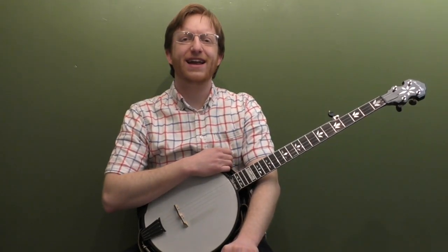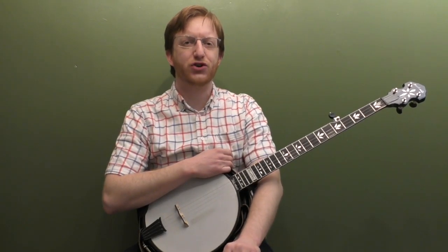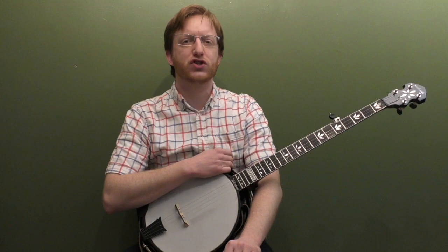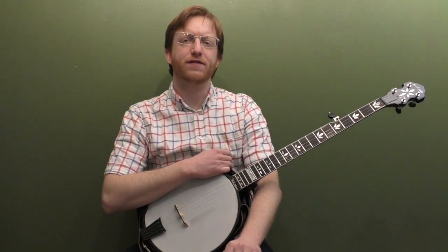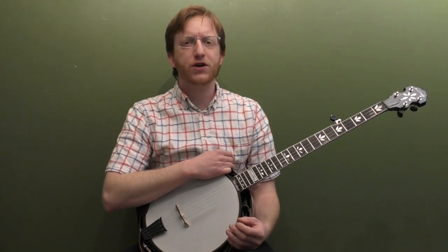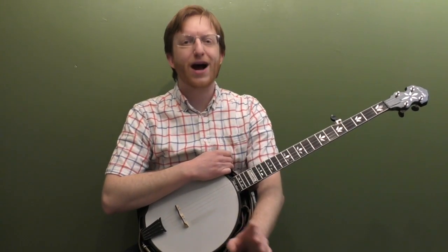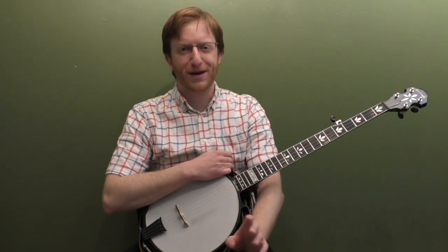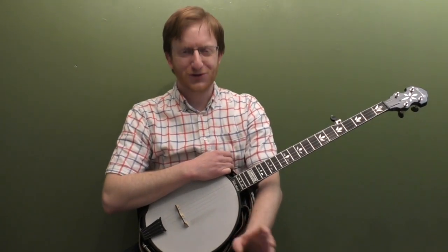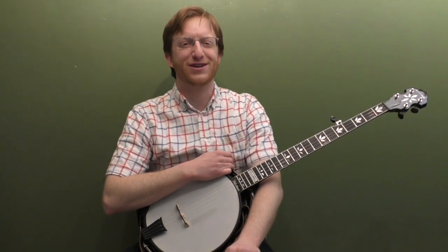Alright everyone up there in banjo land, Mike Henning here, coming to you today with an intermediate up-the-neck version of the classic tune John Henry in the key of G. I did a beginner version of this lesson in the past and we played the solo down the neck, but I wanted to do another version and work on an up-the-neck solo. I heard Rob McCurry play this at a live Del McCurry show and I've been really obsessed with this song ever since. Do yourself a favor, go check out the Del McCurry band. They're one of the best bluegrass bands working today.